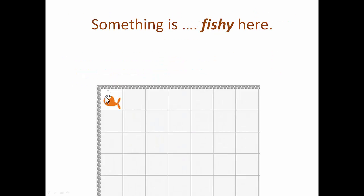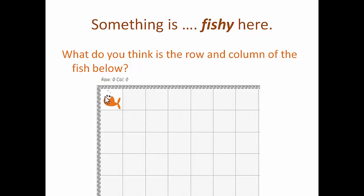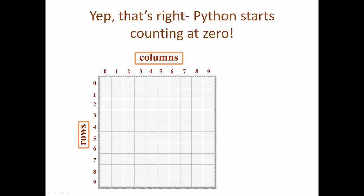However, something is fishy in this tile. What do you think are the row and column of the fish in this square? 0, 0. That's right, Python considers 0 the first number, not 1. So our first row is row 0, and first column, column 0.